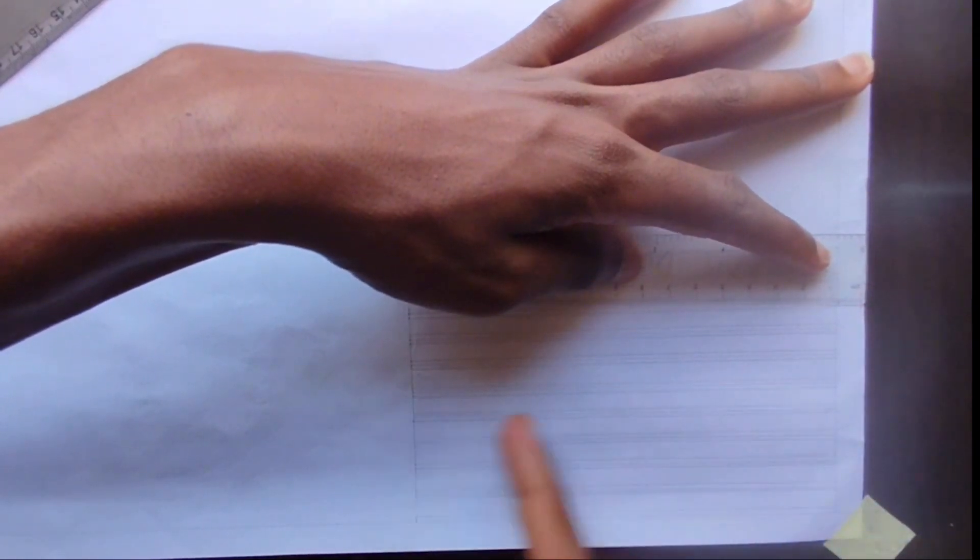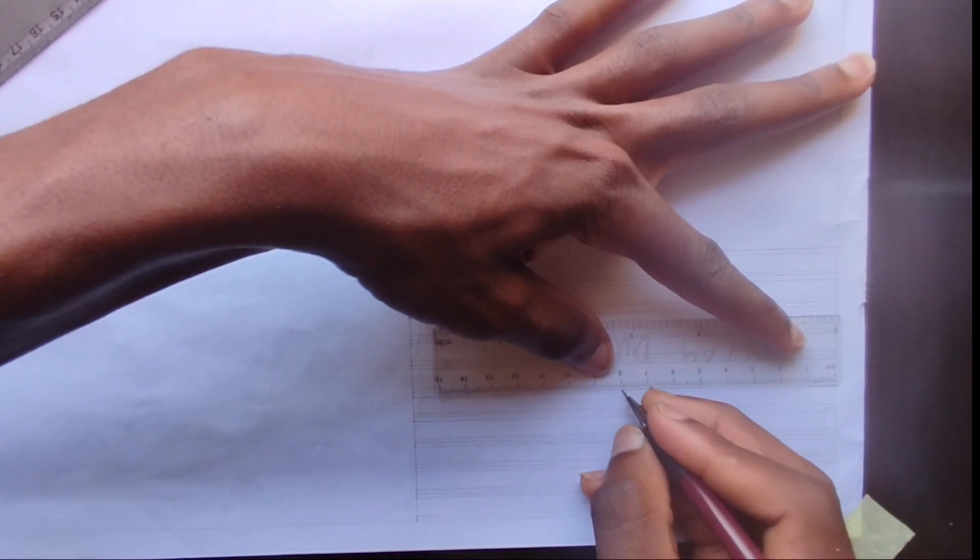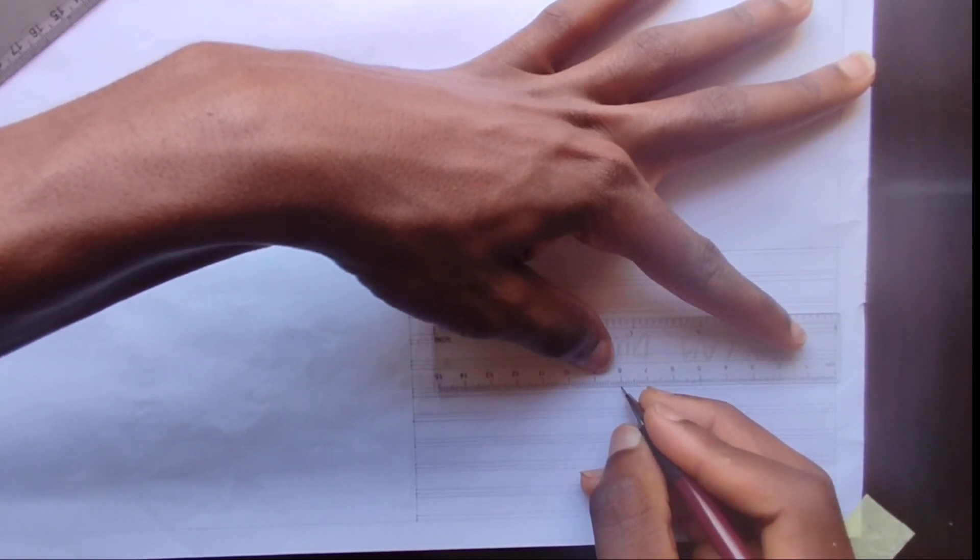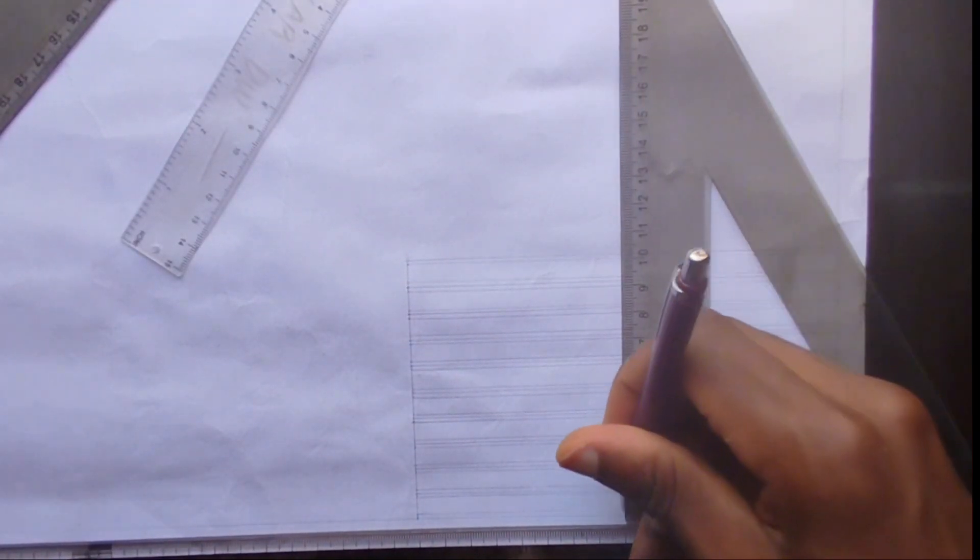Since this space is more than 60mm, we are going to be dividing it into 80, that's 2. So using our T square and set square, we are going to be drawing this.